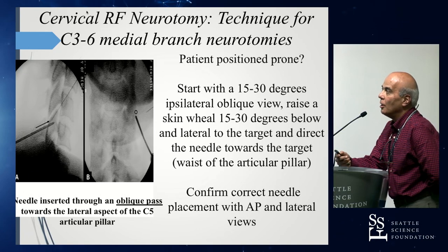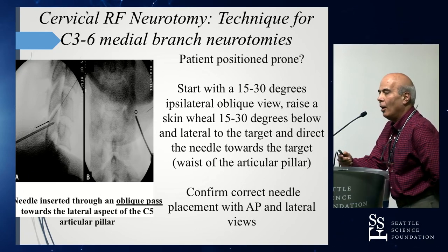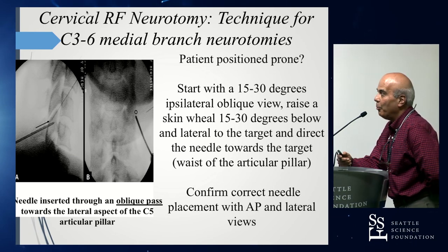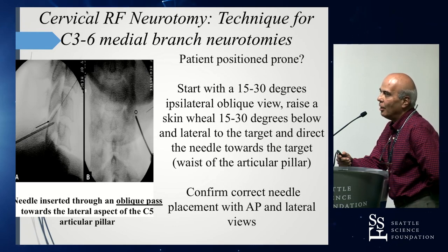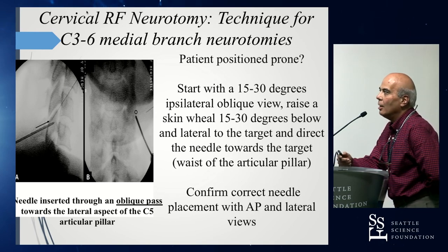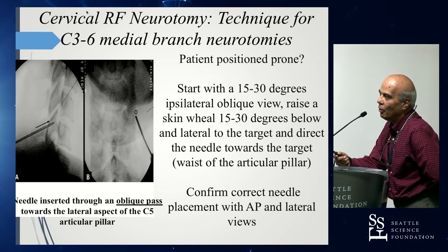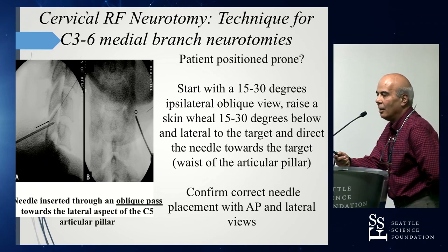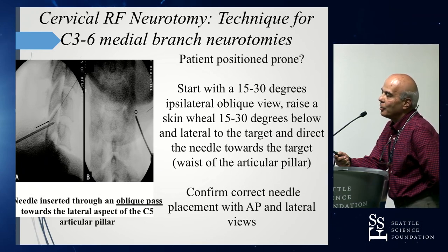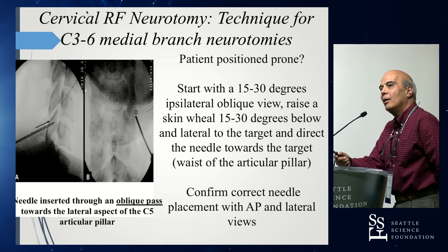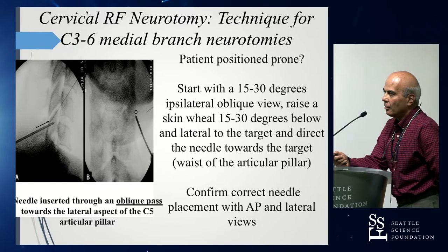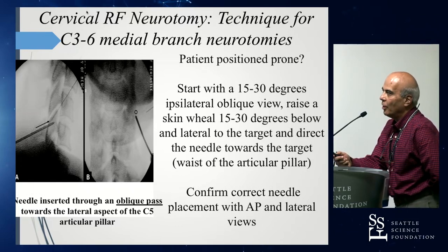If the patient is positioned prone, you can also start with an AP view, then move your C-arm 15 to 30 degrees ipsilaterally oblique, raise the skin wheal 15 to 30 degrees below and lateral to the target, and direct the needle toward the waist of the articular pillar, as shown on the radiographic image. A small circle indicates where you can reposition the needle for a second ablation at that target level. This imaging is particularly for the C5 medial branch nerve.